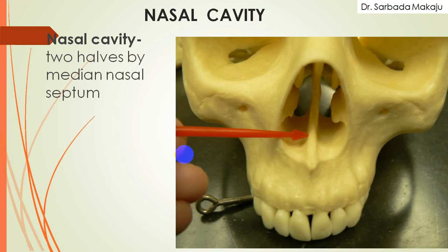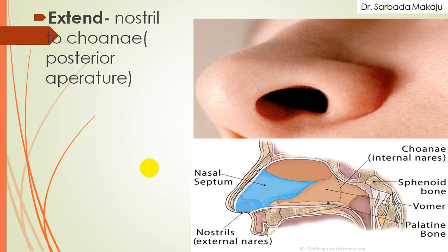Now we will go to the main heading, that is the nasal cavity. After removing the cartilage, this is the skull. After removing the cartilage, there is a presence of the cavity within this nose, and this cavity is known as the nasal cavity. This nasal cavity is divided into half by a median nasal septum. It extends from the nostril, which is the opening present in the external part of the nose, and goes to the inner part where there is one more opening known as the choana, also known as the internal nose.